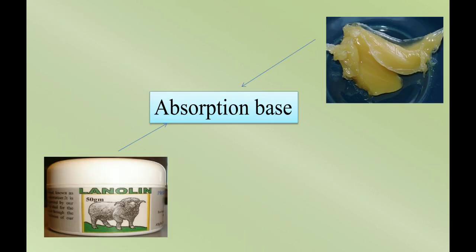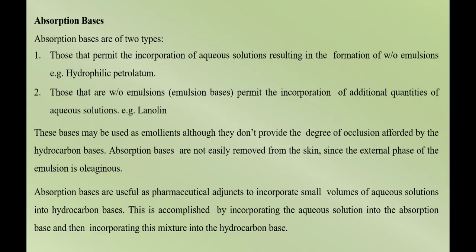Now let's talk about absorption bases. Absorption bases are basically of two types: one type permits the incorporation of aqueous solutions resulting in the formation of a water-in-oil emulsion — example: hydrophilic petrolatum; and the other is a water-in-oil emulsion type which permits the incorporation of additional quantities of aqueous solution — example: lanolin.